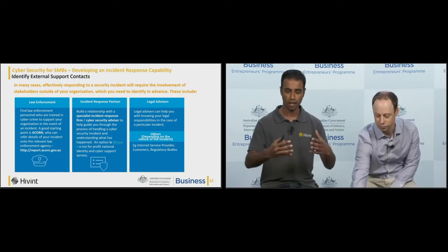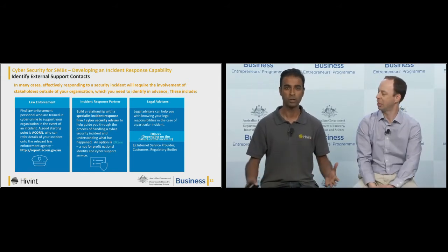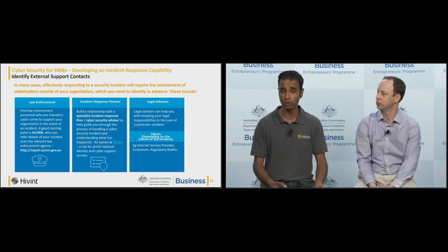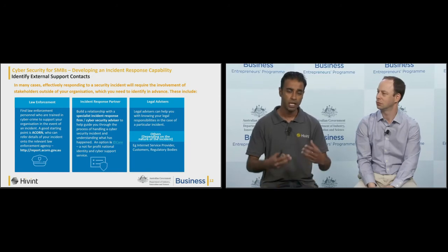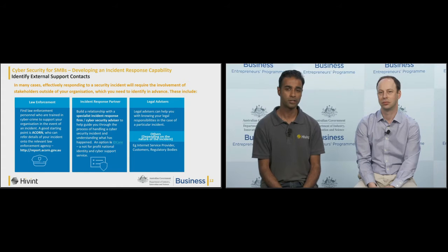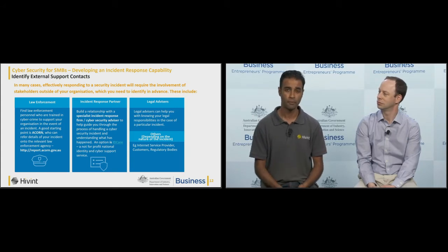The first step is identifying your external support contacts — developing a list of who you're going to contact when you experience a security incident. If there's an element of financial fraud such as from a phishing scam or a business email compromise scam, then engaging law enforcement is particularly relevant. We suggest getting in touch with the Australian Cybercrime Online Reporting Network, known as ACORN, which is a central government point that can forward the details of a potential crime to the relevant law enforcement authority for further investigation.